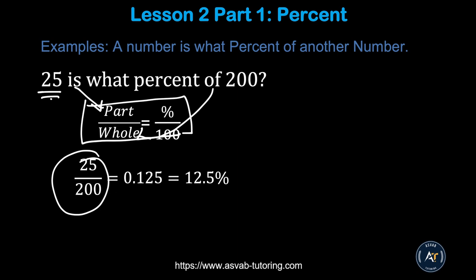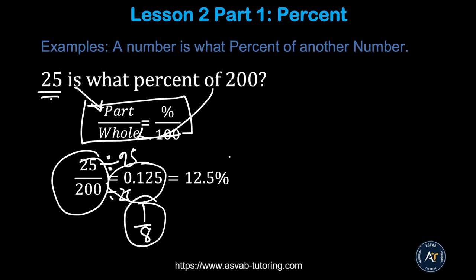Since 'of' means whole, the whole is 200, and the part is 25. So we write 25 over 200. Simplify by dividing both sides by 25 to get 1 over 8. One over eight equals 0.125; move two decimal places from left to right to get 12.5 percent.